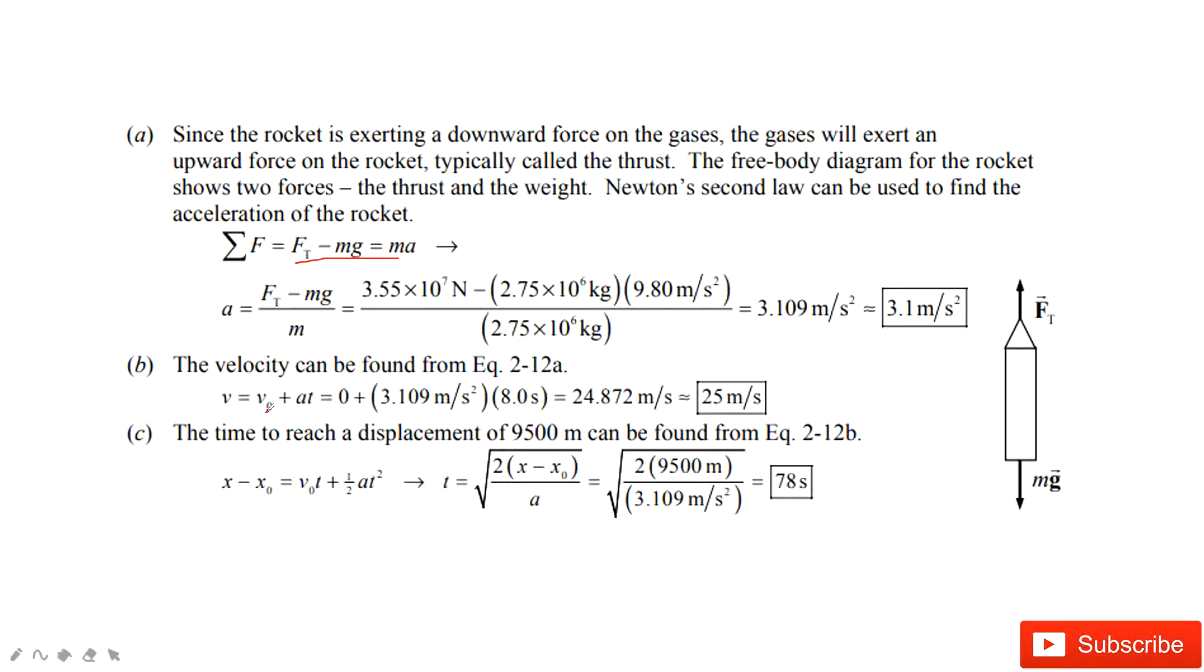To find the velocity after a certain time, we use this motion equation. Initial velocity plus acceleration times t. The initial velocity is zero. So then we are done.